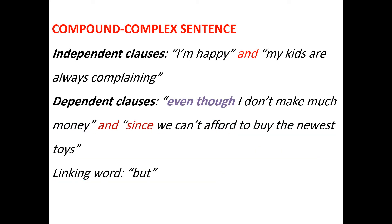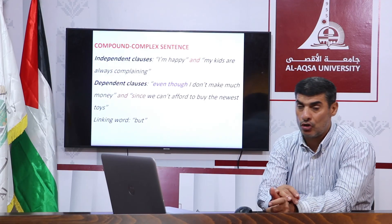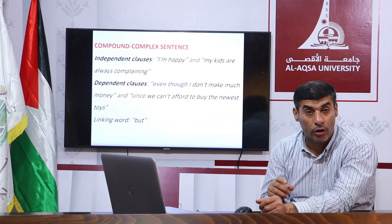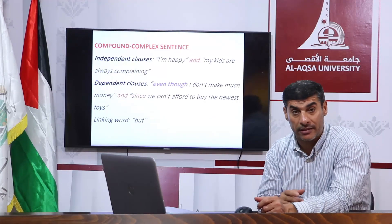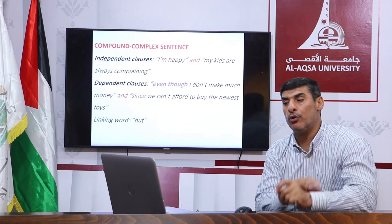Independent clauses: 'I am happy' and 'my kids are always complaining.' Dependent clauses: 'even though I don't make much money' and 'since we can't afford to buy the new toys.' We use the coordinating conjunction like 'and,' 'but,' 'so' to link two clauses having equal importance. Robert, a friend I have known since high school, doesn't eat meat, so Barbara made a special vegetarian dish for him. 'Robert doesn't eat meat' and 'Barbara made a special vegetarian dish for him' are the independent clauses. 'A friend I have known since high school' is the dependent clause. 'Who' or 'that' is deleted because the meaning is implied — it describes the object. 'So' is the coordinating conjunction.